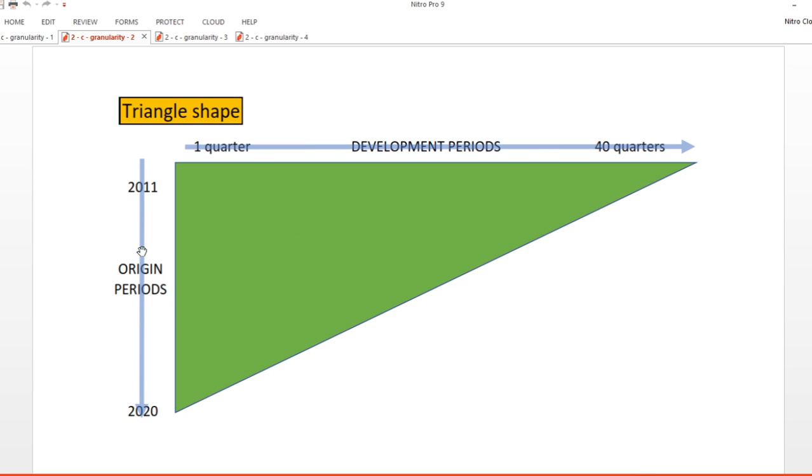Choosing origin period length is very much driven by the balance we discussed earlier. Going monthly may provide great insight, but there may be too little data in each origin month and your model may get unwieldy, whereas going longer might make spotting trends that much harder.